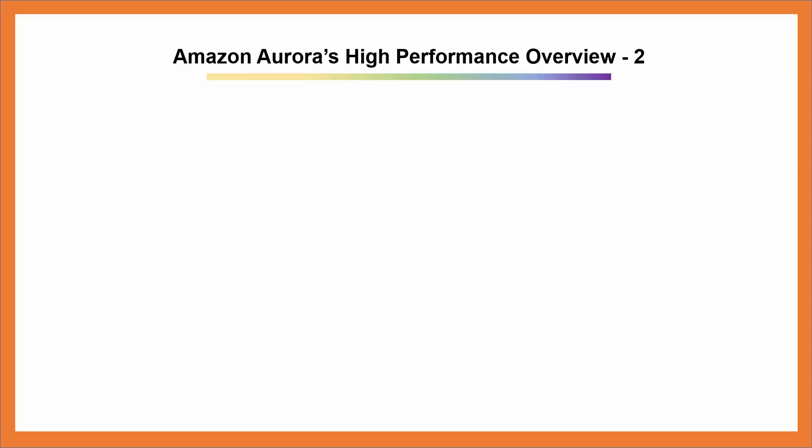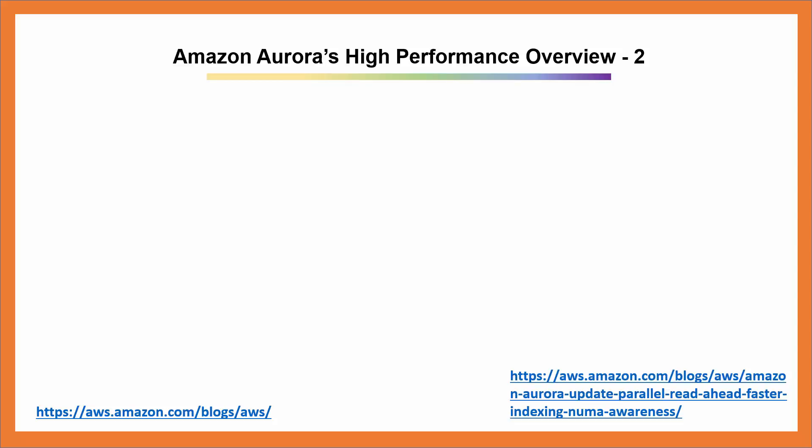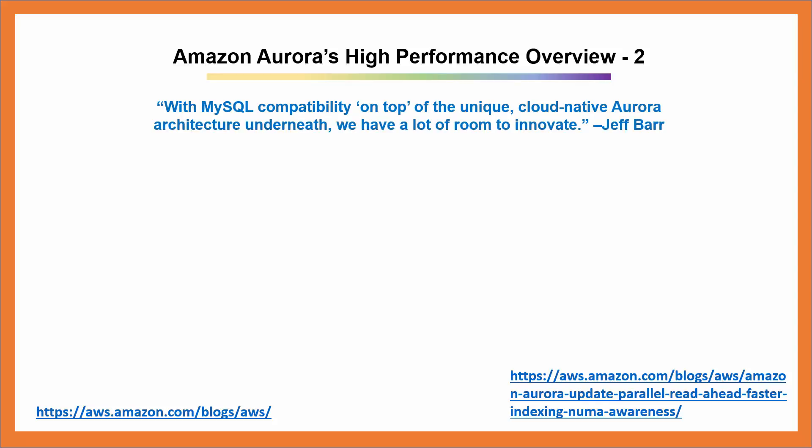Jeff Barr, chief evangelist at Amazon Web Services, has an amazing blog that keeps everyone abreast of all the changes made in AWS — I encourage you to visit it often. On September 2, 2016, Jeff announced three performance improvements, each one aimed at making Aurora more performant on a wide variety of workloads commonly run by AWS customers, writing: 'With MySQL compatibility on top of the unique cloud-native Aurora architecture underneath, we have a lot of room to innovate.'